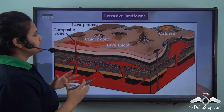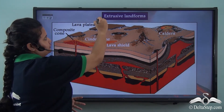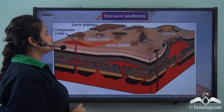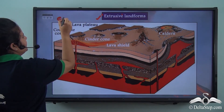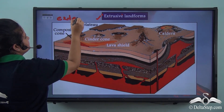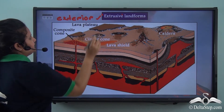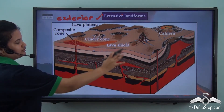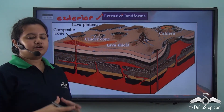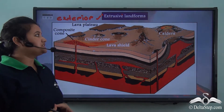This picture shows the different extrusive landforms. The word 'extrusive' comes from the word 'exterior.' All these landforms are formed on the earth's surface and therefore they are called extrusive landforms.